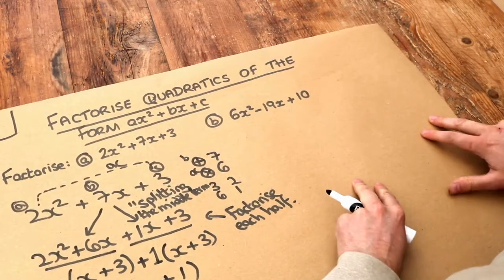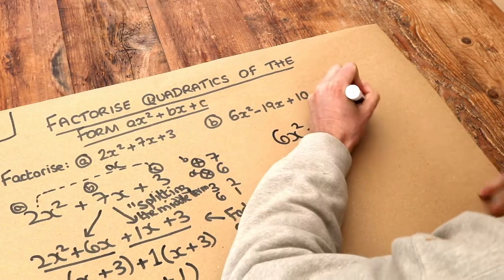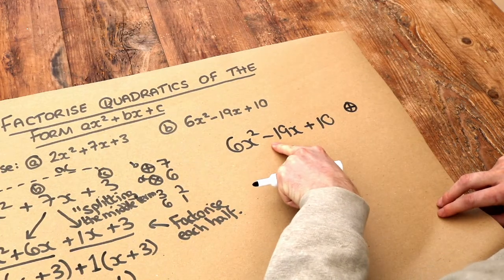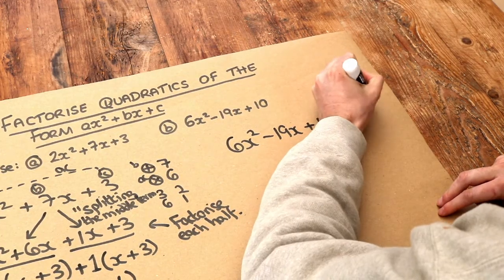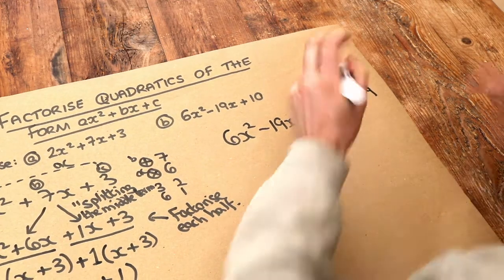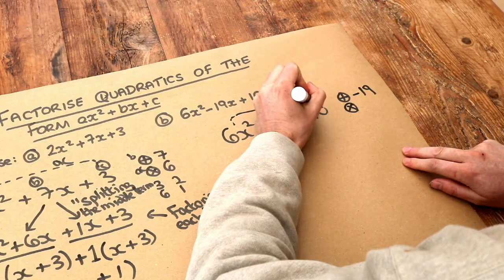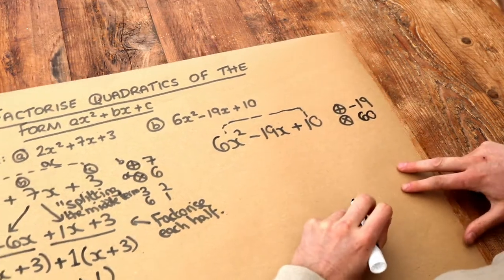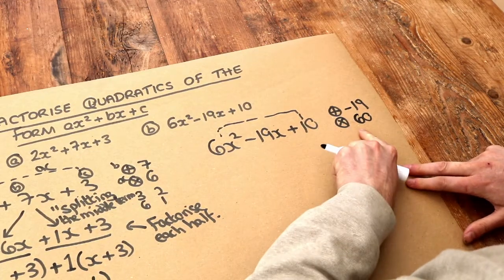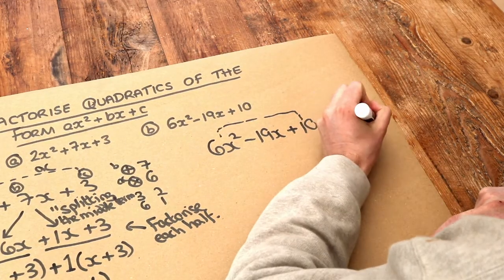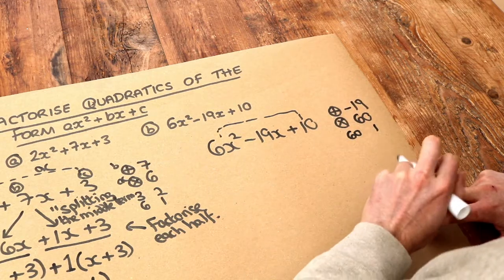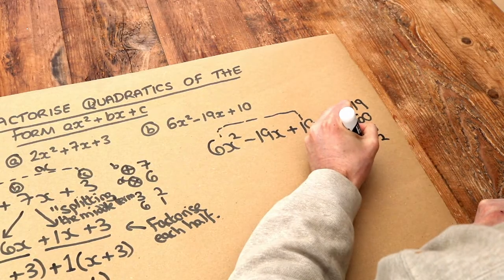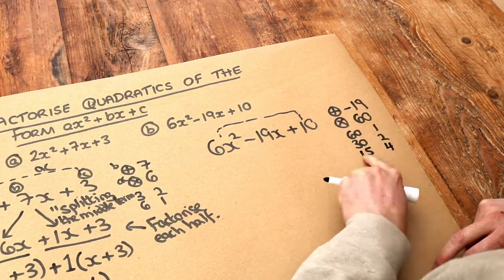Now let's apply this same method to this second one here. Let's write this big. Again we find two numbers which add to give the middle number, which is minus 19, don't forget the minus, and then multiply to give AC, so the first times the last number. 6 times positive 10 is 60. And again let's consider numbers that multiply to give 60. Well it could be 60 and 1, but they don't combine in any way to make minus 19. It could be 30 and 2, again don't combine to make 19 in any way. What about 15 and 4? Well they do add to give 19.